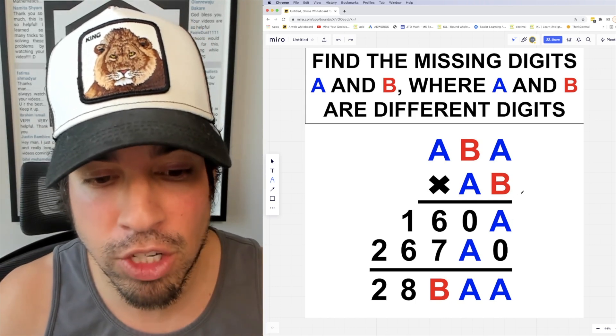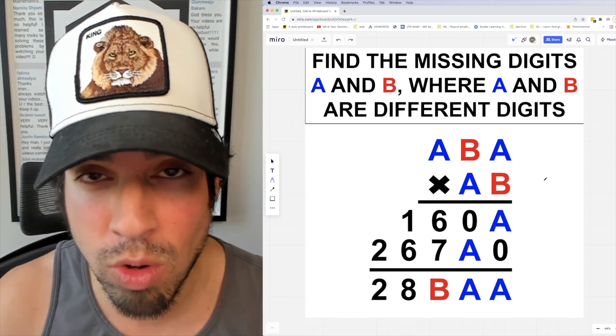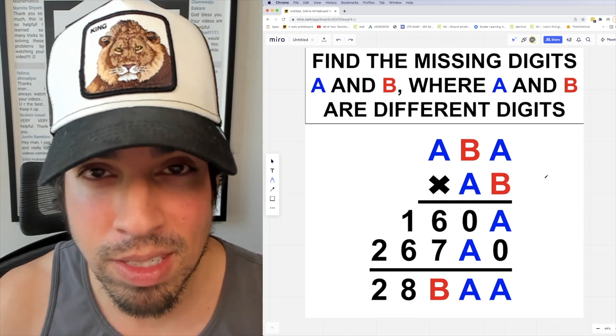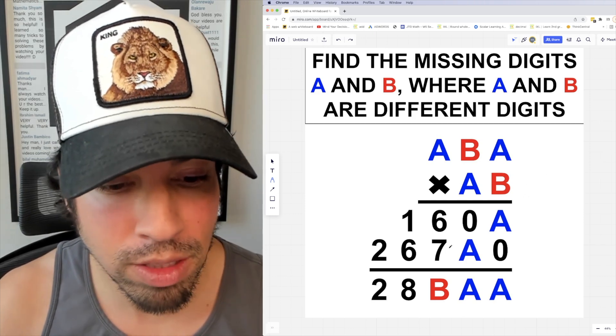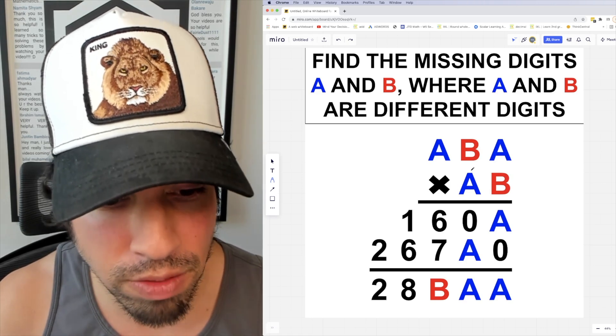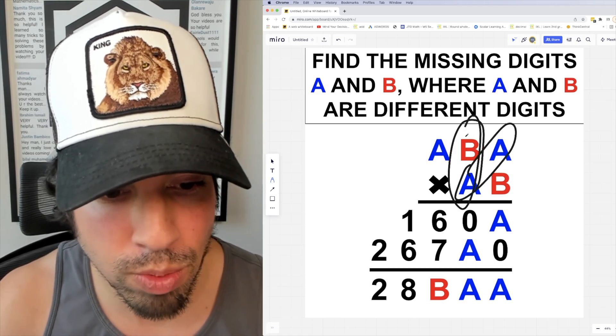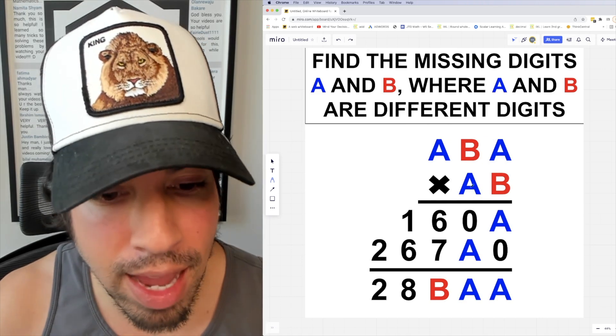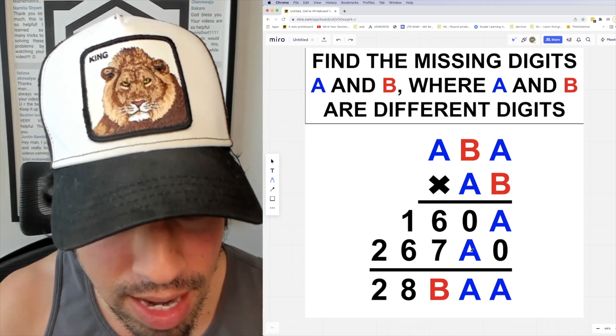I want to look for the spot where I can draw the most specific conclusion possible. Well, check out the second line. When we multiply the second row here, this is the product of A multiplying this way, this way, and this way, which means that A times A ends in an A.